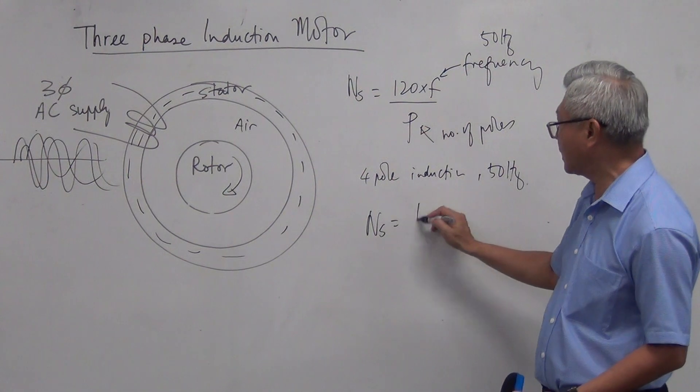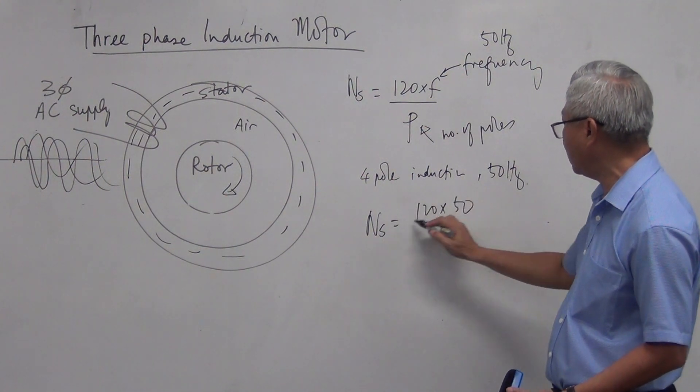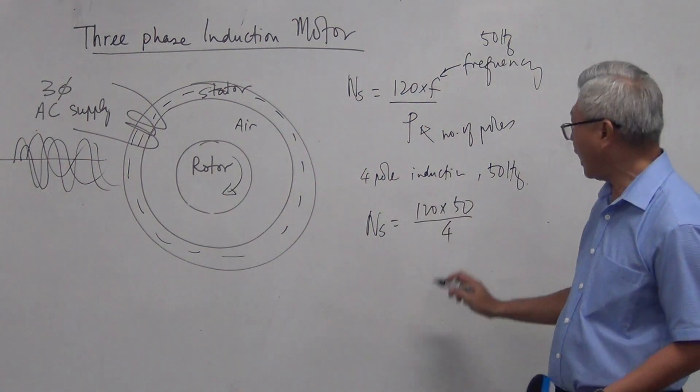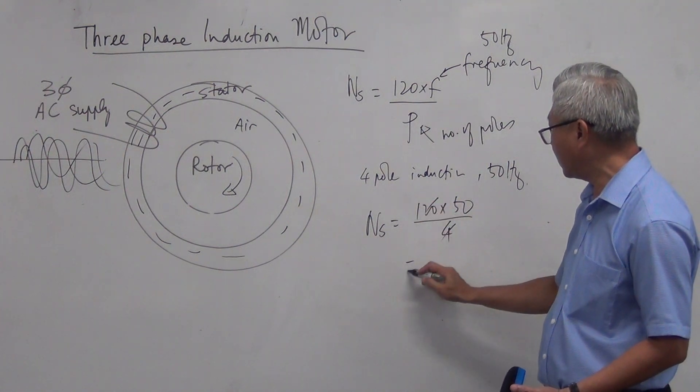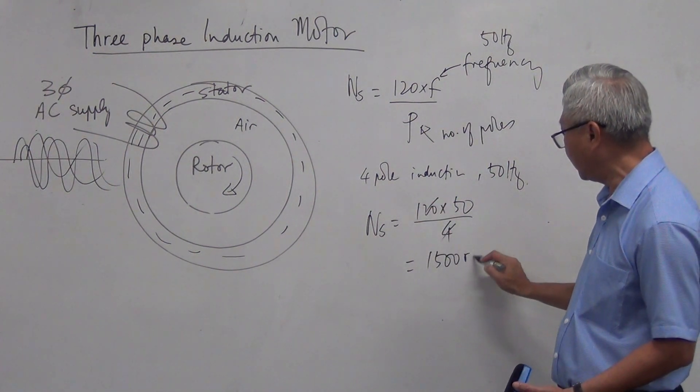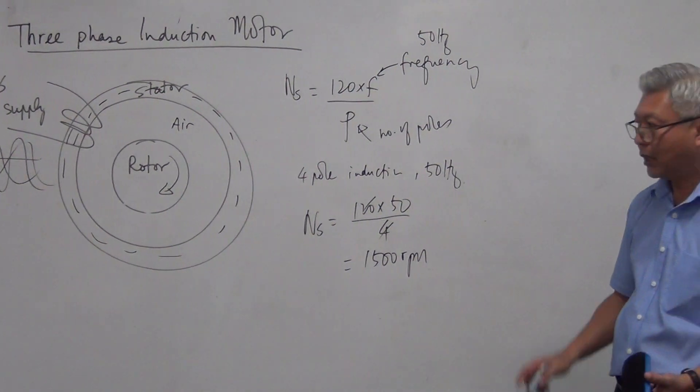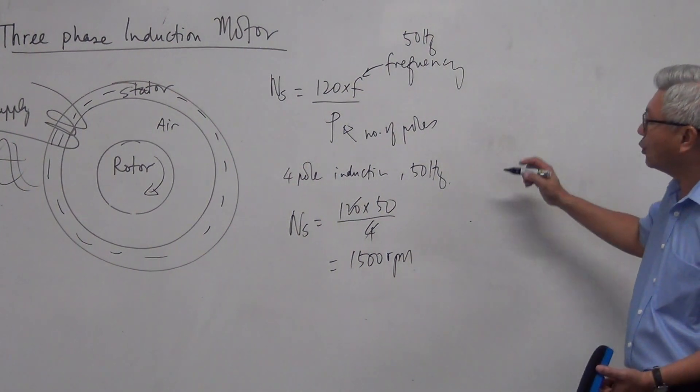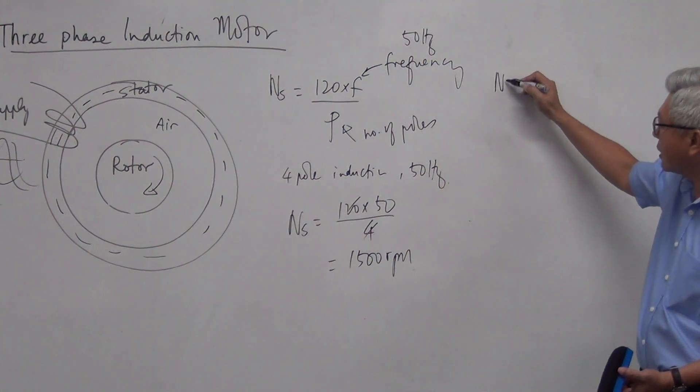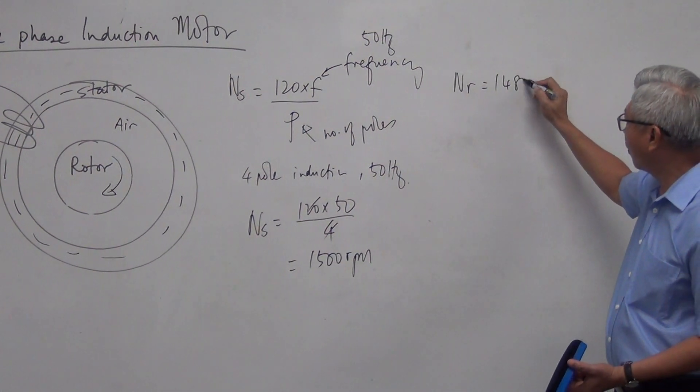Then the NS, the synchronous speed is 120 multiplied by 50 divided by 4. So that is equal to 1500 RPM. So that is the synchronous speed.